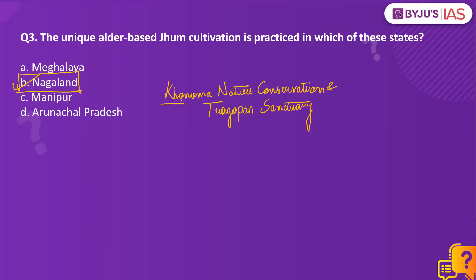Another important fact: the Konoma Nature Conservation and Tragopan Sanctuary won the India Biodiversity Awards 2021. It is important to remember the location of this sanctuary, which is in Nagaland. The India Biodiversity Awards is a joint initiative of the Union Ministry of Environment, Forest and Climate Change, the National Biodiversity Authority, and the United Nations Development Programme.